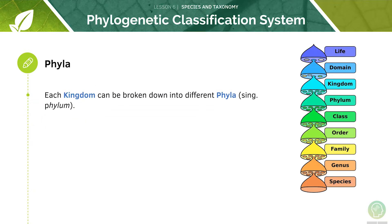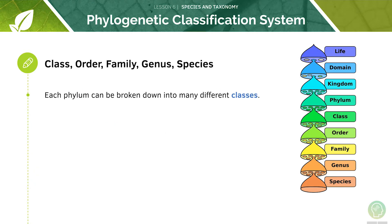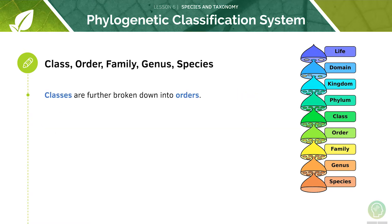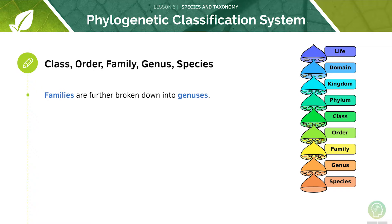Each of the kingdoms can be broken down into different phyla. The kingdom Animalia consists of 11 distinct phyla. Each phylum can be broken down into many different classes, which are designed to group together similar species within a phylum. Classes are further broken down into orders, orders into families, which can be further broken down into genera. Genera are finally broken down into species.